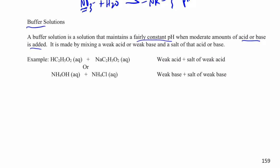It's made by mixing a weak acid or a weak base and a salt of that acid or base. Let me give you a couple of examples. Acetic acid is a weak acid. A salt of that weak acid would be sodium acetate. If I mixed this acid with the salt of that acid, I would have what's called a buffer.